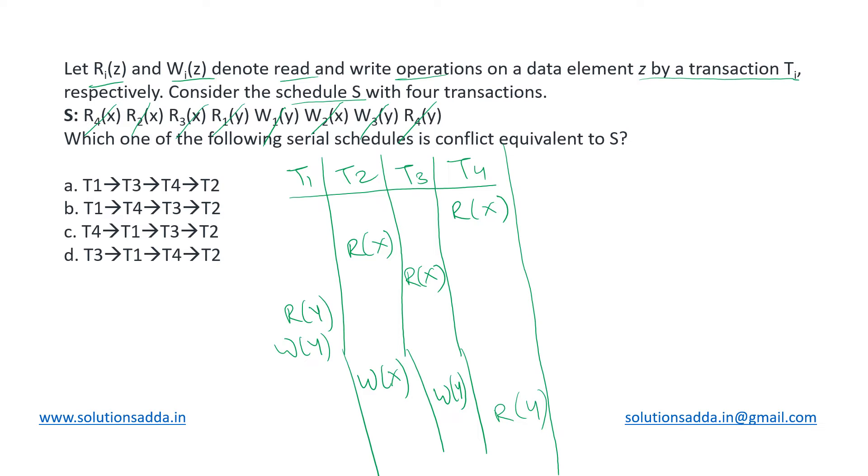Now let us find out what are the dependencies existing in this particular schedule. As we can see, this is read of y and this is write of y, so there will be a dependency between them. This is write y and this is read y, so again a dependency between them. Then we are having this write of y and write of y, then write of y with read of y.